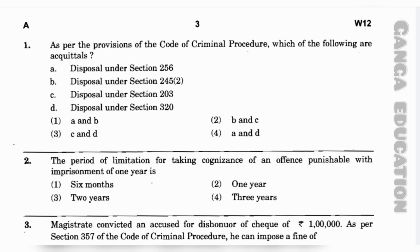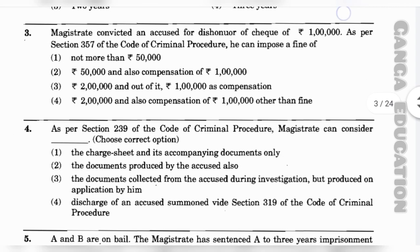Question number 2: The period of limitation for taking cognizance of an offence punishable with imprisonment of one year is — option 1, option 2, option 3 (two years), option 4 (three years). The correct answer is option 2 — one year.